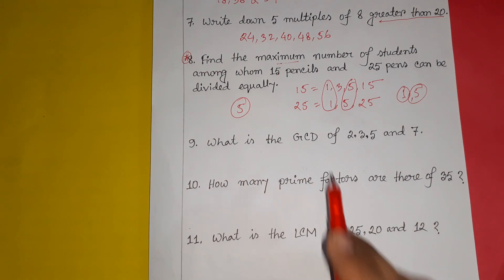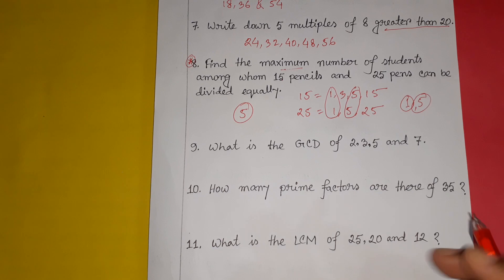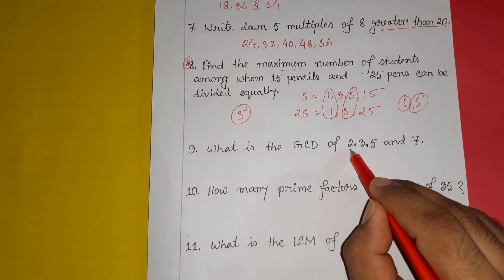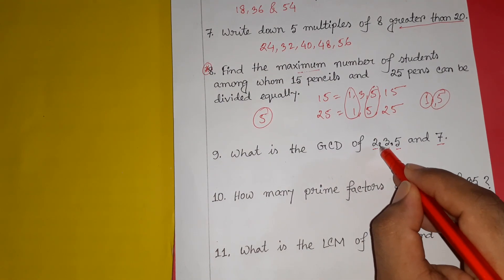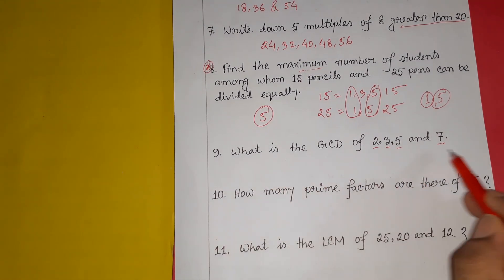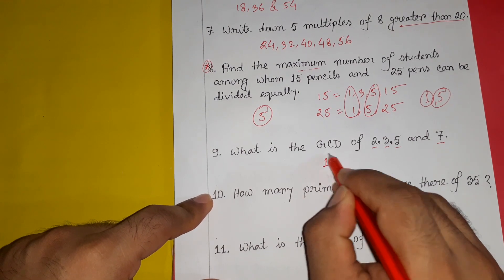Question number 9: what is the GCD of 2, 3, 5, and 7? These are all prime numbers — numbers divisible only by 1 and themselves. The factors of 2 are 1 and 2; of 3 are 1 and 3; of 5 are 1 and 5; of 7 are 1 and 7. The only common divisor is 1, so the GCD of 2, 3, 5, and 7 is 1.